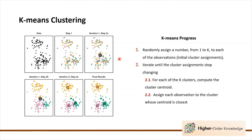Then we iterate until the cluster assignments stop changing. First, we compute the cluster centroid for each cluster, and then we assign each observation to the cluster whose centroid is closest. For instance, all data points closer to the yellow centroid are associated with the yellow cluster. We repeat this process until there's no change in cluster assignments, producing our final result.